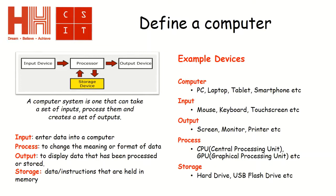The data that we enter gets processed. Those instructions that we are giving the computer get processed, and this changes the meaning or the format of data. So that mouse click that we have just done will now get processed, and that's done first of all inside the CPU, which is the central processing unit.